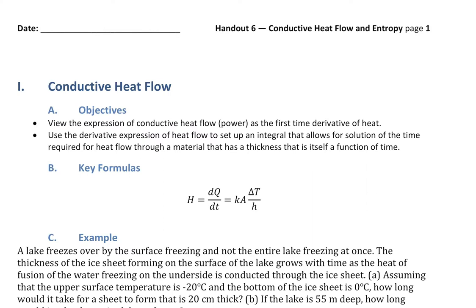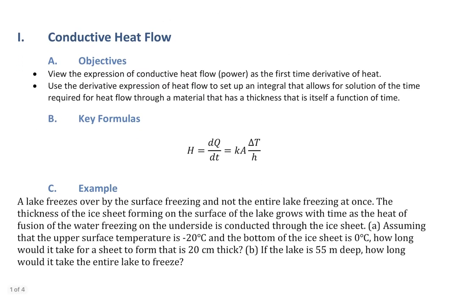Our objectives here are to view the expression of conductive heat flow, which is power — joules per second, or watts — as the first time derivative of heat, dQ/dt. We're then going to use that derivative expression to set up an integral that allows for solution of the time required for heat flowing through material whose thickness is itself a function of time. It's a simple differential equation where we treat the derivatives like fractions, and then solve with direct integration.